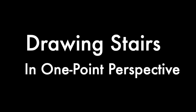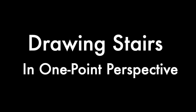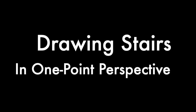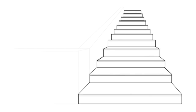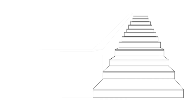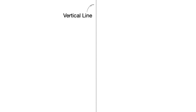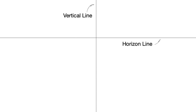In today's exercise we're going to be drawing stairs using one-point perspective. To begin, draw a vertical line in the center of the page. Then draw a horizon line approximately two-thirds up from the bottom.